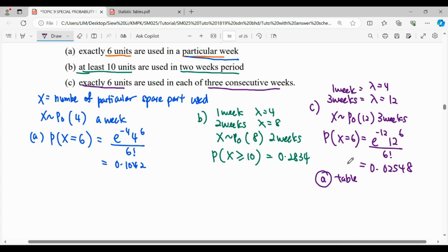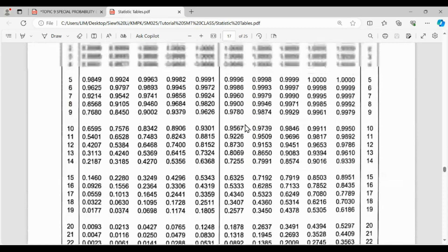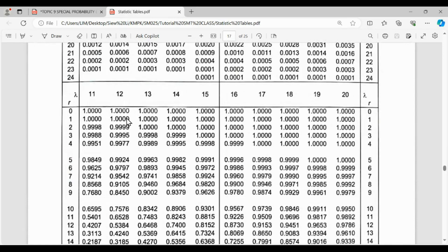When you want to read exactly 6 from the table, it can be read by starting from the value of 6, then minus the value that we don't want, which starts from 7. So P(X ≥ 6) minus P(X ≥ 7). We go to the table where lambda is 12, and we're going to read the readings for 6 and 7.